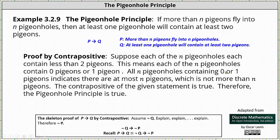All n pigeonholes containing zero or one pigeons indicates there are at most n pigeons, which is not more than n pigeons, which is given by the statement P, and therefore not P is true.